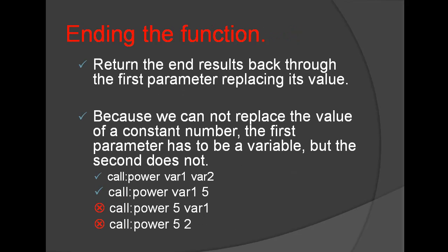At the end of the loop we return the end result back through the first parameter, replacing its value. Because we cannot replace the value of a constant number, the first parameter has to be a variable, but the second does not.